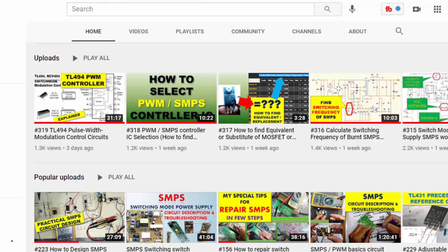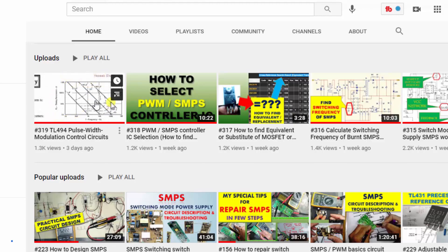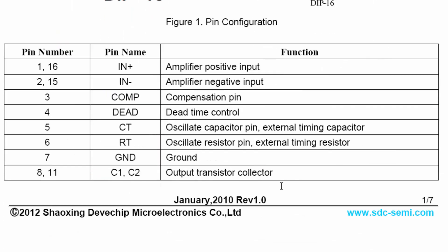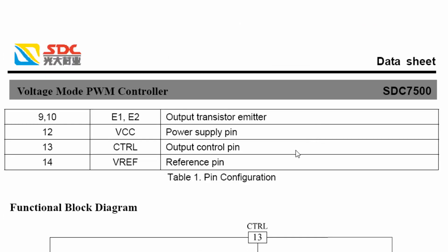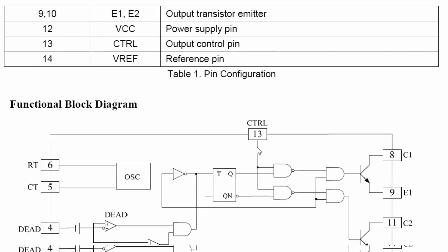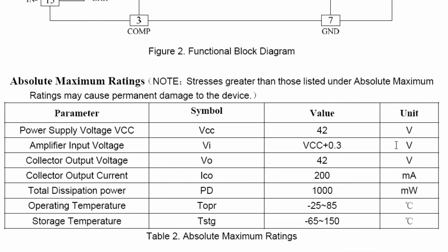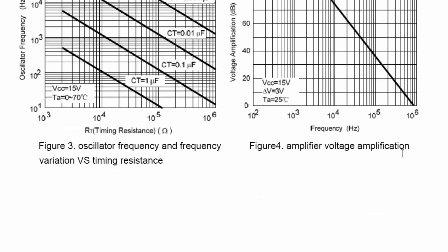I will give the link in the description for easy access. If you want to understand the detailed parameters and best functions of this IC, please check my video number 319. The only difference is the name — the SDC7500 is essentially a TL494, working exactly the same way.